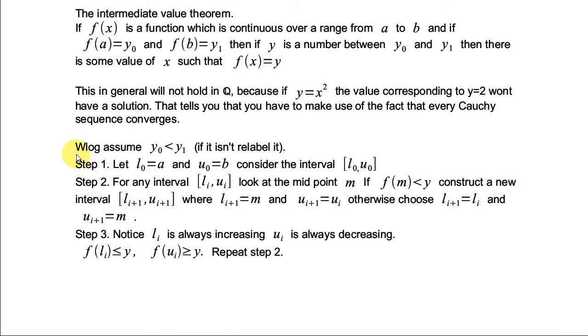OK, so let's do it. Well, without loss of generality, you can assume that y0 is less than y1, because if it isn't, just relabel it. So let l0 be a and u0 be b, and look at the interval l0 to u0. That's what we're going to do, and then construct another interval, and so on.